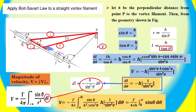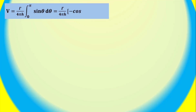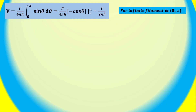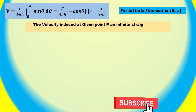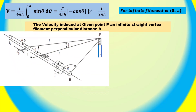The velocity equals gamma divided by 4π times h, times the integral from 0 to π of sin(θ) dθ. The velocity induced at a given point P by an infinite straight vortex filament is equal to gamma divided by 4π times h, for the full infinite filament integrated from 0 to π, which simplifies to gamma divided by 2π times h.